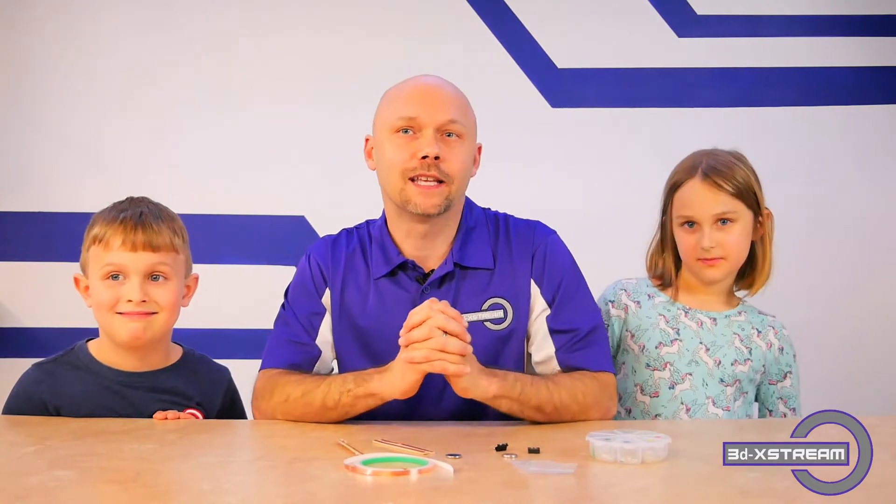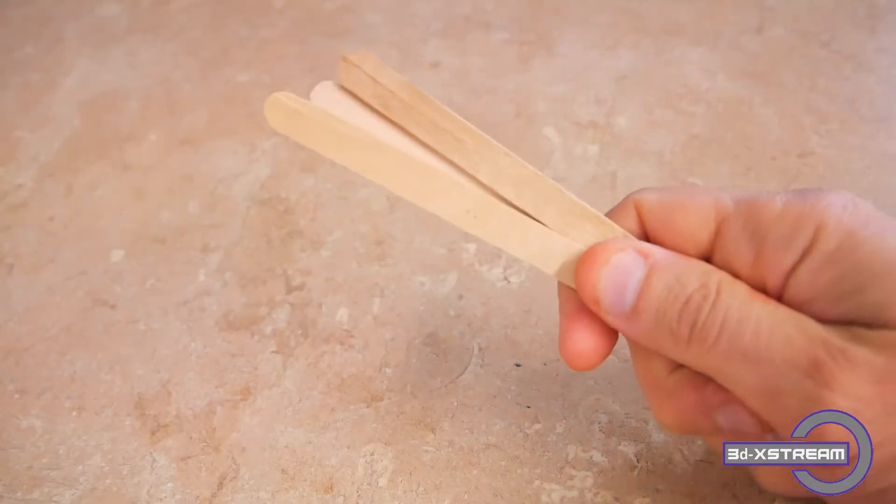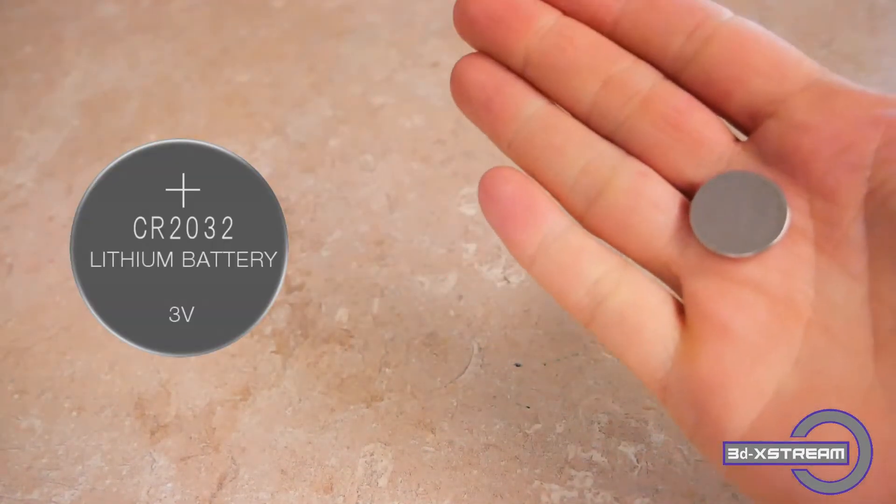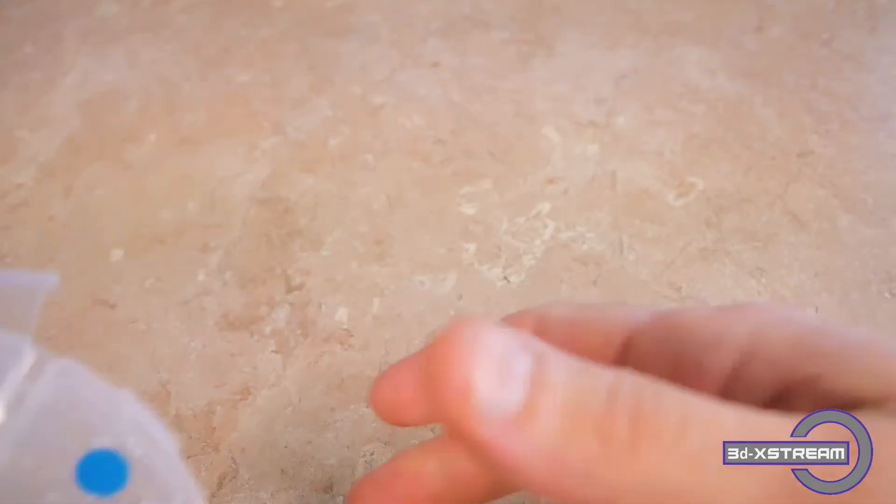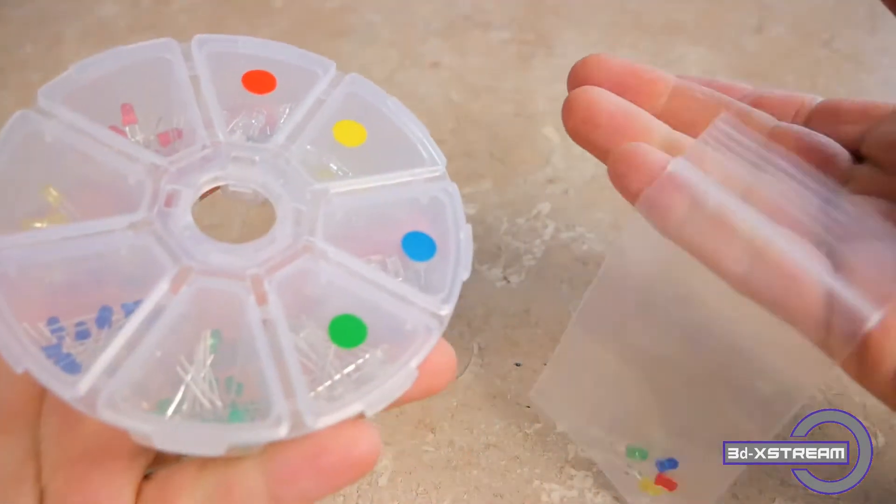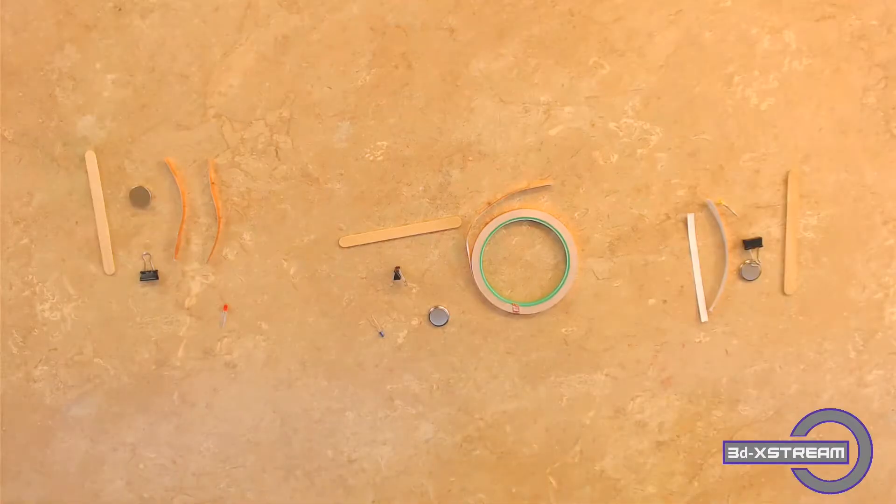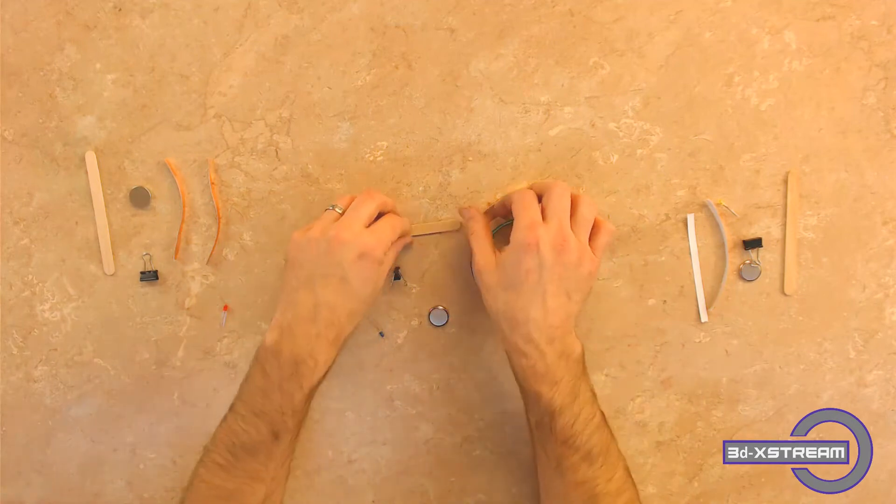Let's go ahead and get started. You're going to need a popsicle stick, a binder clip, a CR2032 battery, an LED light, and some copper tape. Grab a popsicle stick and your copper tape.